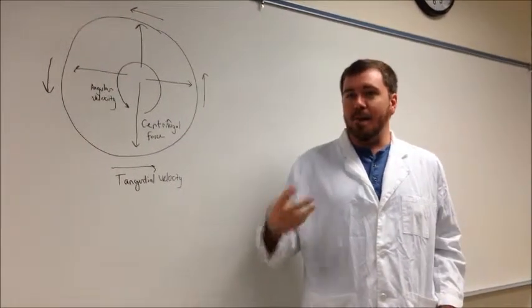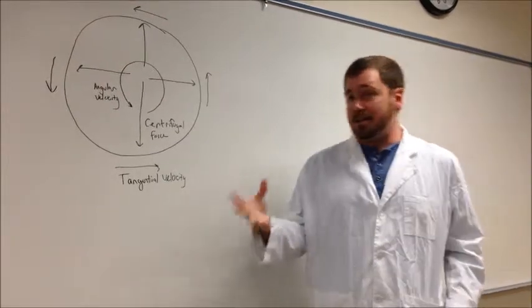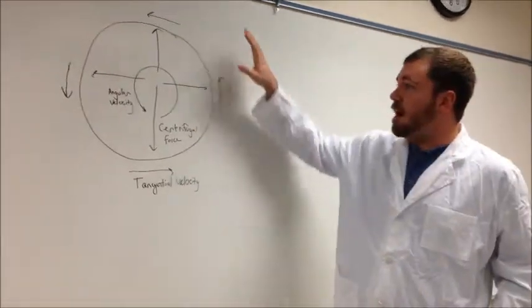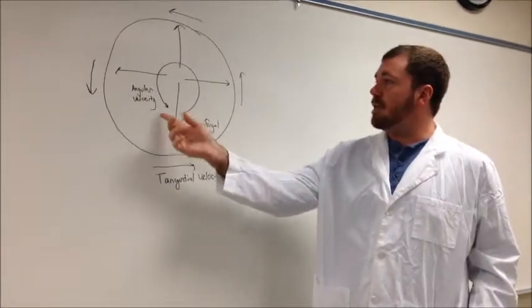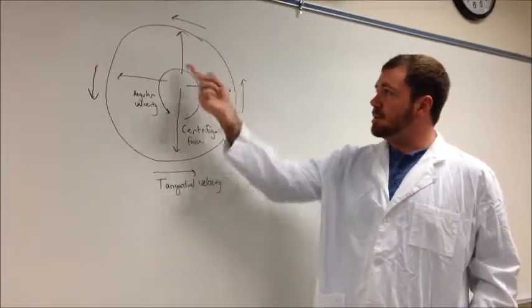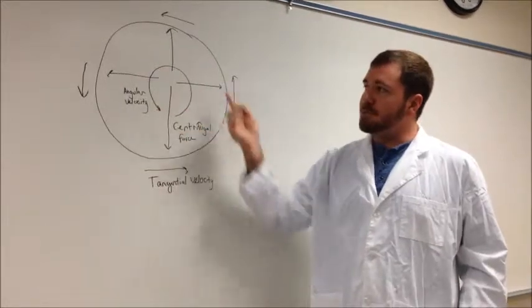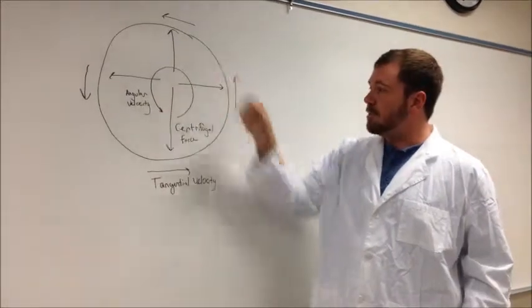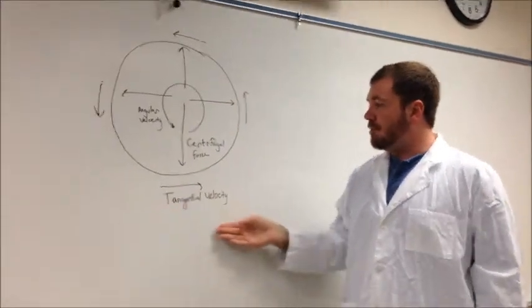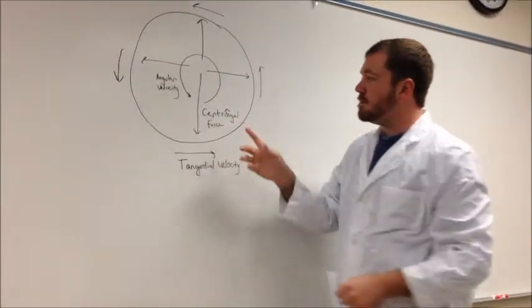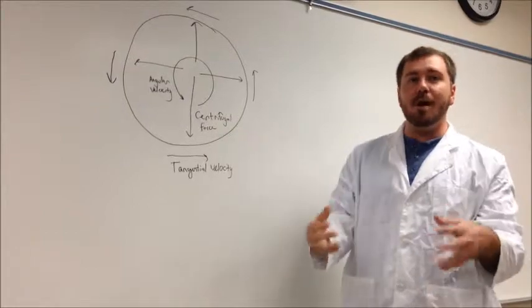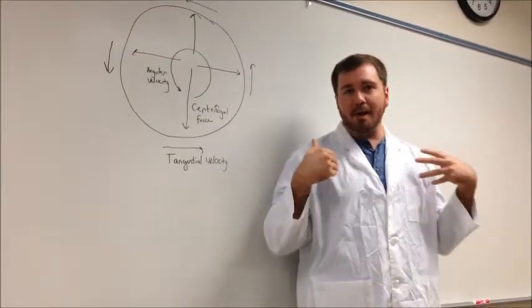So a ride like the Gravitron works much like a centrifuge where you have a few forces operating on your body as it's going. For example, you have the angular velocity, which is the velocity on the inside, measured in meters per second, the speed it's spinning. Then you have the tangential velocity, which is very tangent to the most important force, which is centrifugal force, which is why you feel all of your organs pushing into your back.